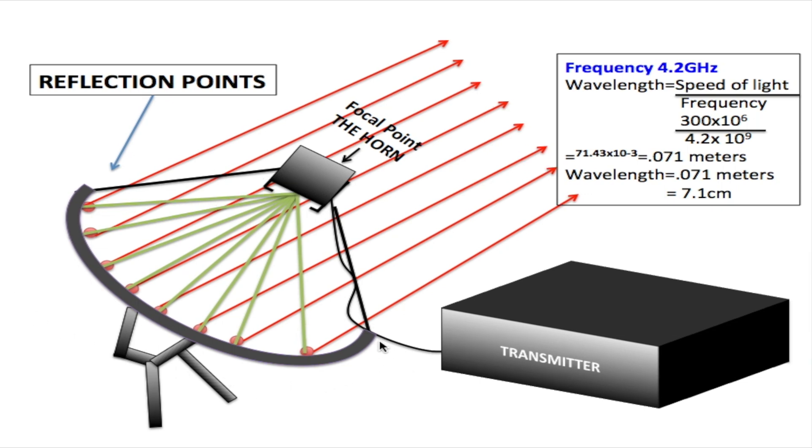In order to calculate what size dish we would need at a frequency of 4.2 gigahertz, the first thing we have to calculate is the wavelength. Every frequency would have a different wavelength, so the wavelength for 4.2 gigahertz is what we're going to be calculating right now.